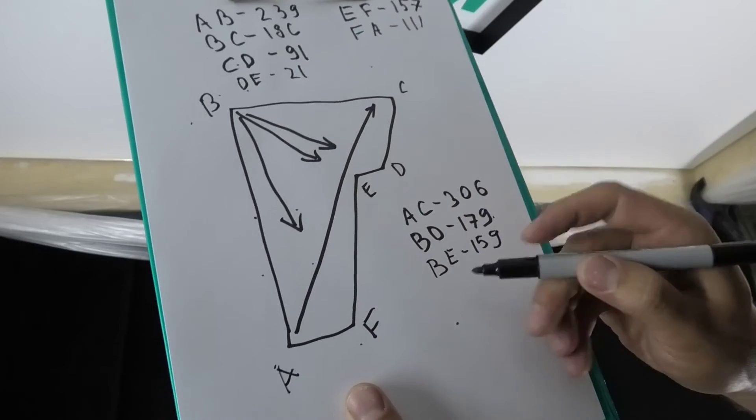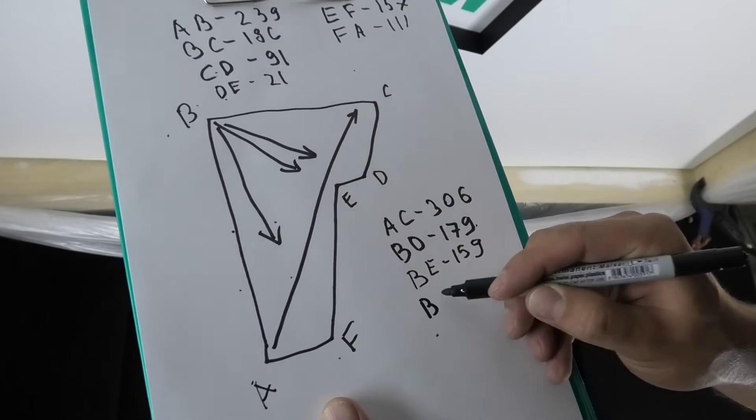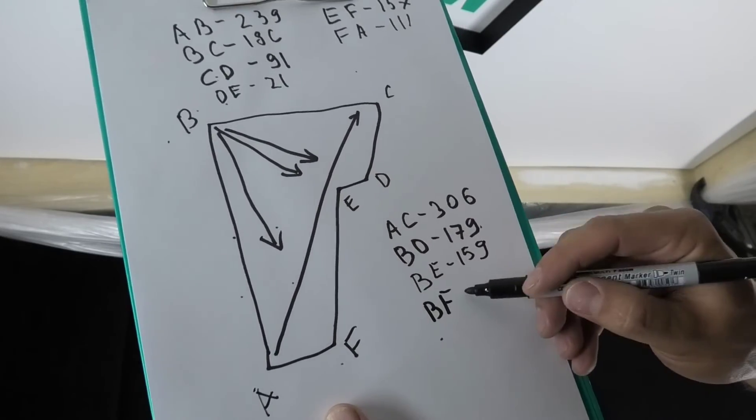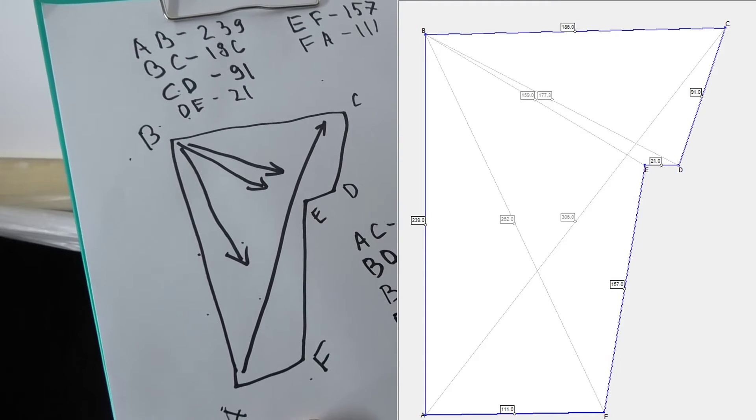In this room, you need the size of the diagonal AC, BD, and BF. This is how the ceiling drawing looks like in the program.